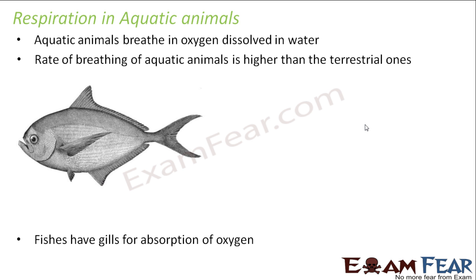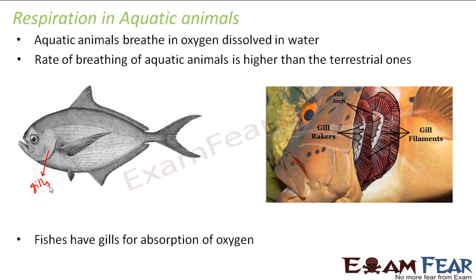Let us take the example of an aquatic animal like fish. Just as human beings have lungs for absorption of oxygen, similarly fishes have gills to absorb the oxygen dissolved in water. The gills are present somewhere here. These gills are used for absorption of oxygen. If you look at this picture, you can see how exactly the gills look like — if you would have ever seen them in real life, I am not too sure. Looking at this gill, you can see that it consists of filament-like structures.